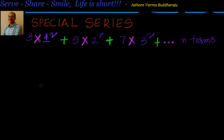We are going through a special series as part of sequences and series. The problem we have is 3·1² + 5·2² + 7·3², and we have to find the sum of this series up to n terms. If you observe, the first terms are 3, 5, 7 — that's an arithmetic progression. So I can write it as 3 + 5 + 7, that is my first series.